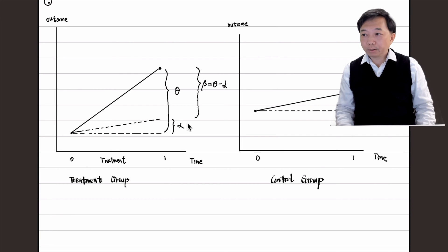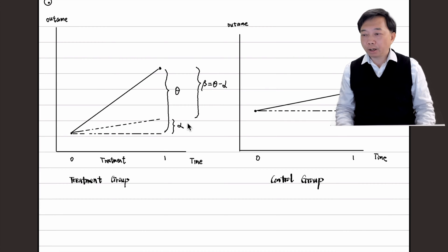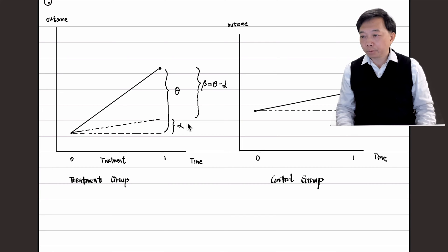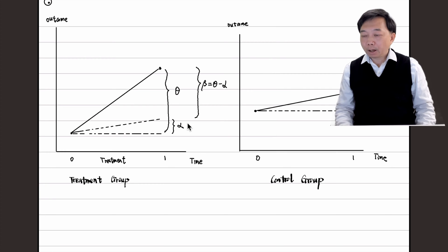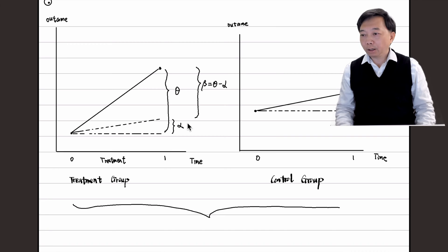The crucial assumption here is that the trends for both high-income and low-income workers are the same without the treatment. If the trends are different, we can consider the difference-in-difference-in-differences method. The triple difference method is to find an additional control group. In our example, both the high-income and low-income workers are from the state of Kentucky. An additional control group comes from workers in another state, Michigan. We can call Kentucky the treatment state and Michigan the control state.